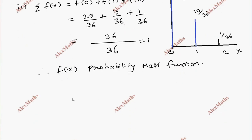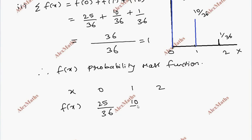So the PMF table is: x = 0, 1, 2 with corresponding probabilities 25/36, 10/36, and 1/36. This completes the probability mass function.